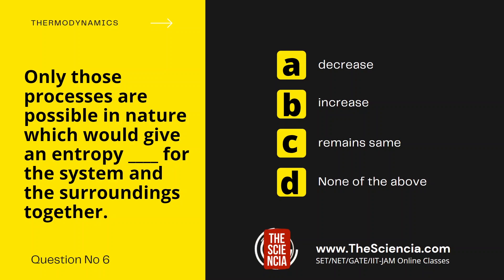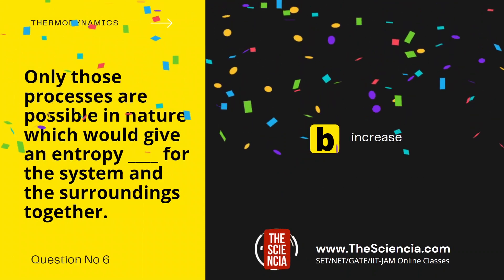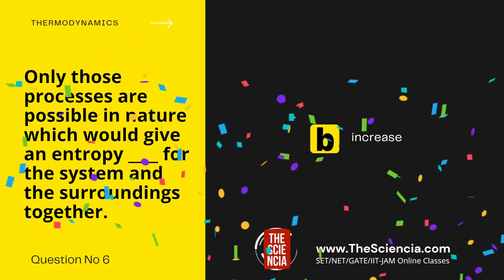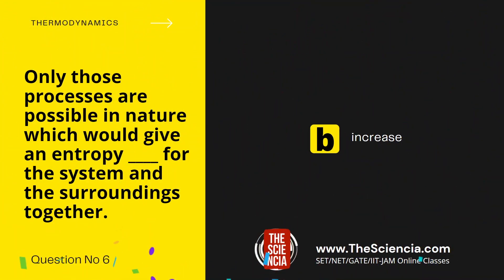Now let us check the correct answer. The correct answer is: only those processes are possible in nature which would give an entropy increase for the system and surroundings together.